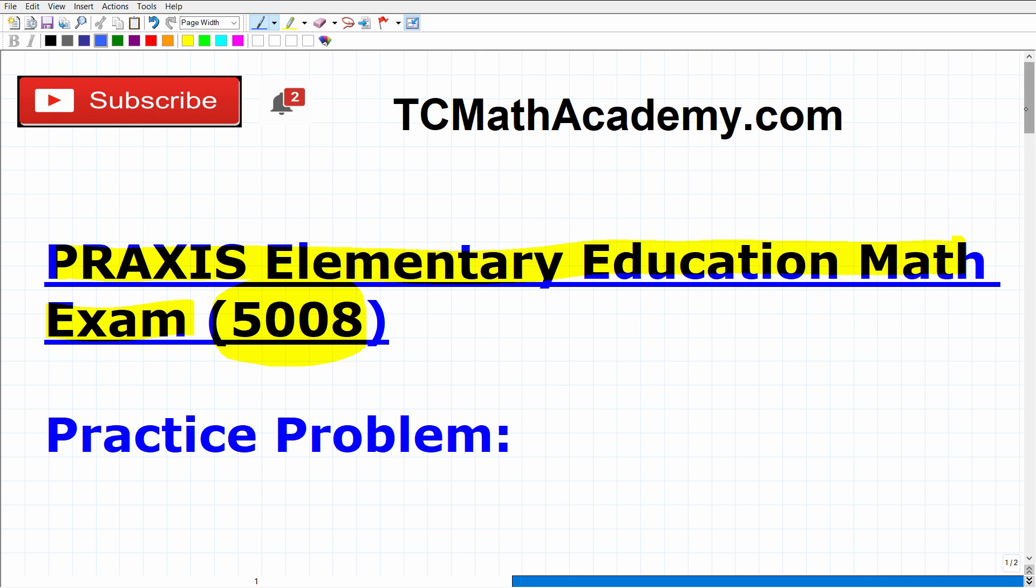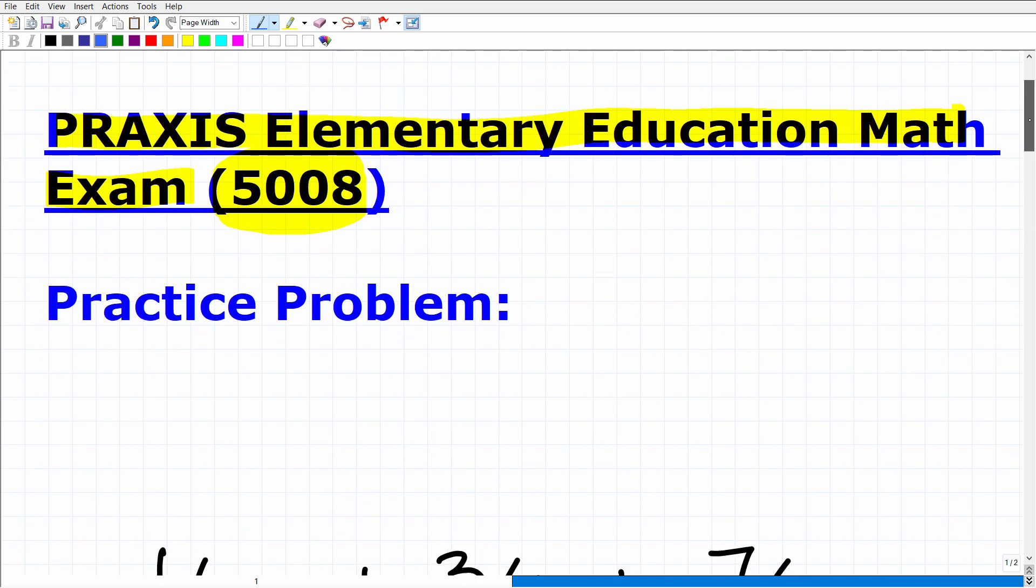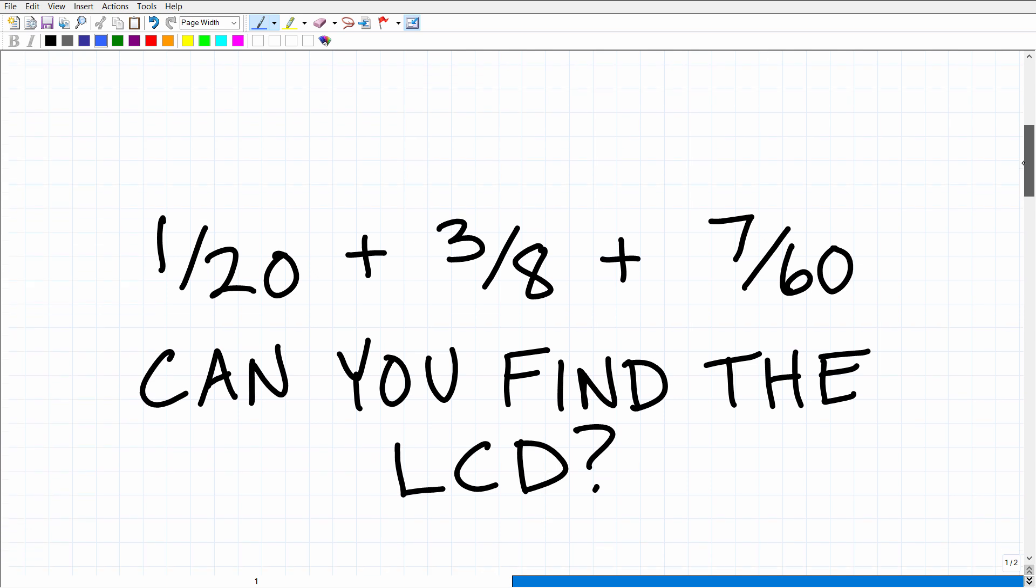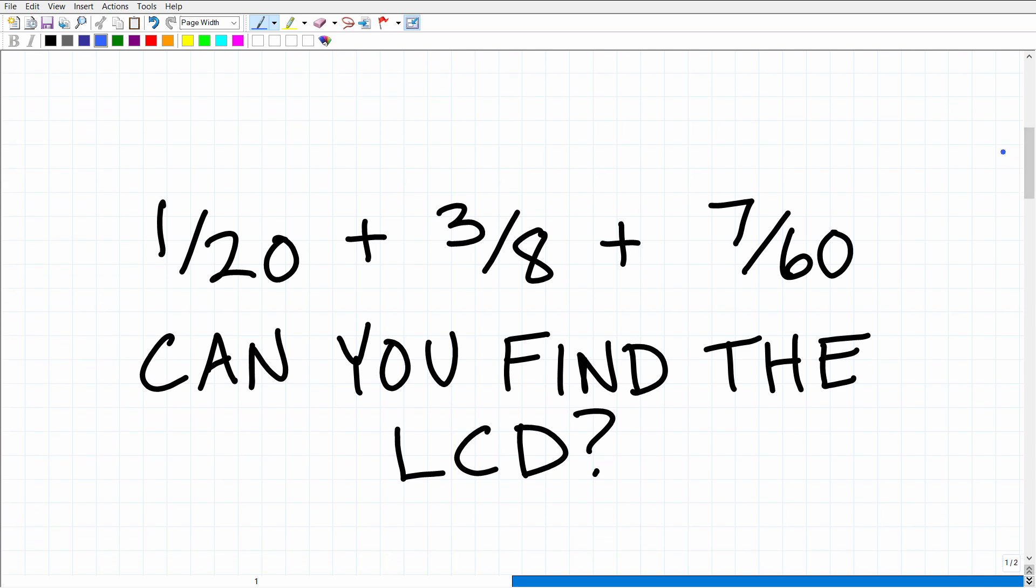And what I have here for you is a practice problem that you should be able to do without any difficulty. Let me actually show you the problem. So here I have three fractions. What I want you to do without the aid of a calculator is to find the lowest common denominator. But I kind of want you to take it a step further. I want you to act as if you are going to teach this to some students. Okay, what would be the procedure?